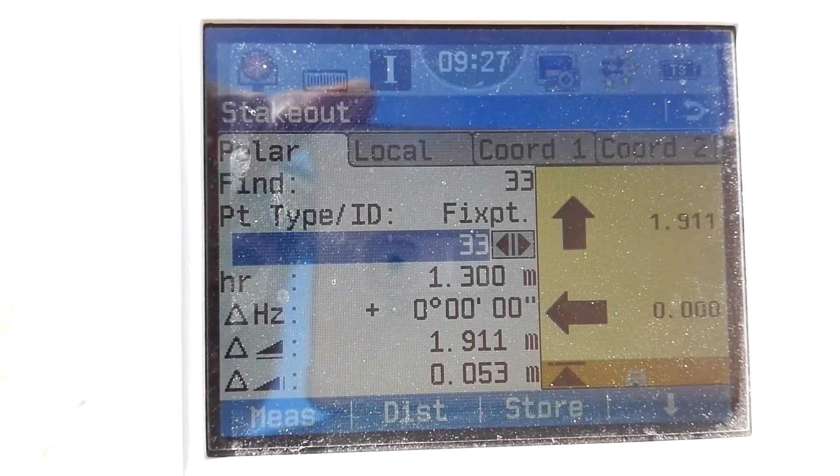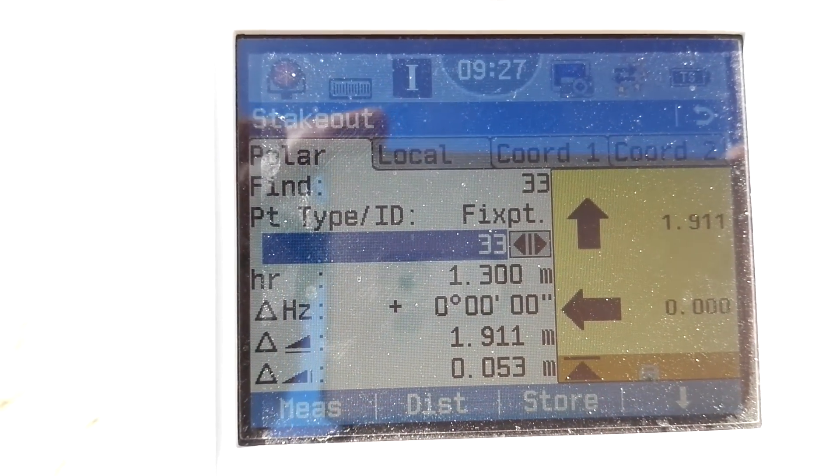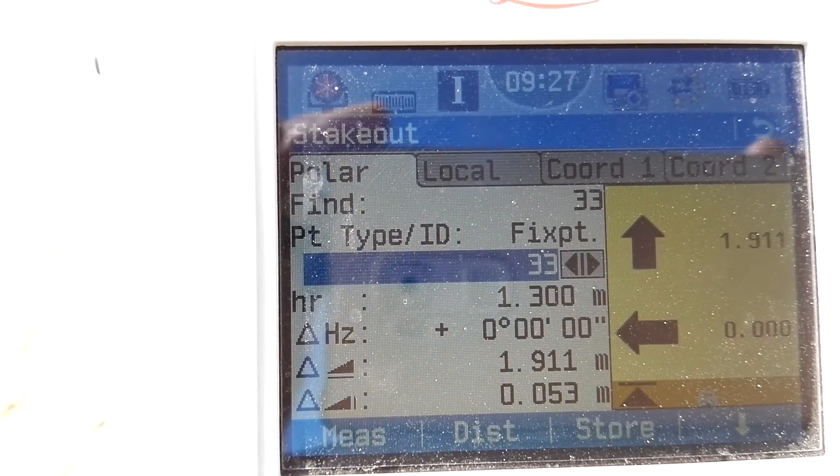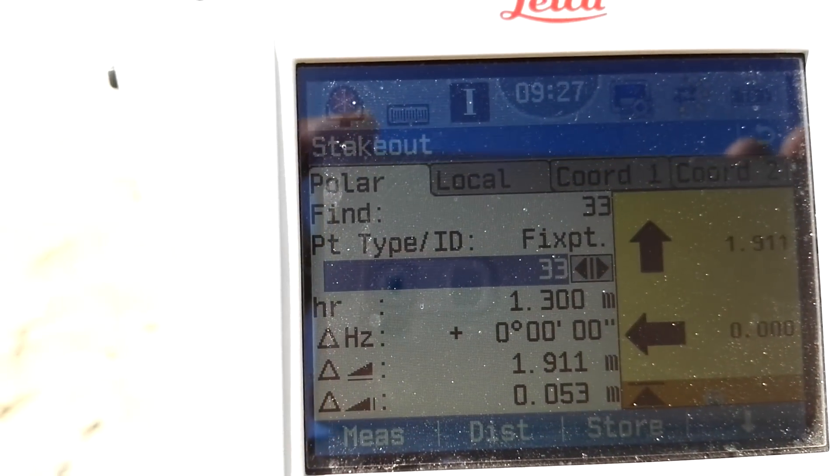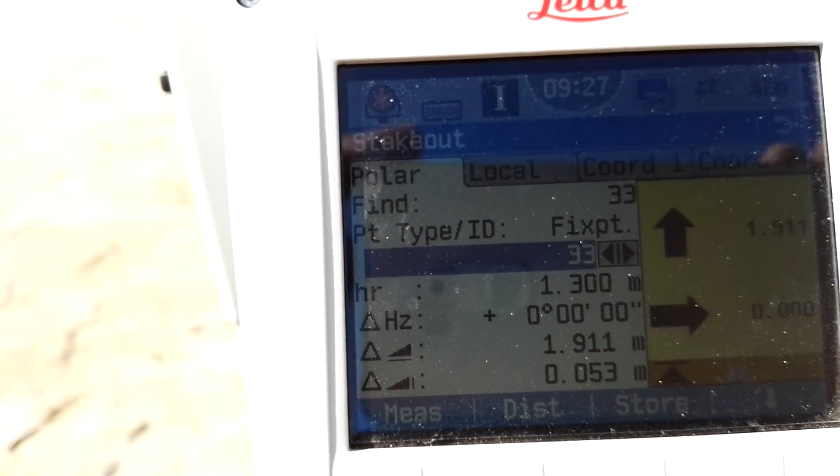So here they appear on the display one meter 91 centimeters backward. As you can see on the display.